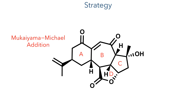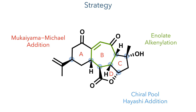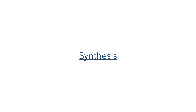The strategy that they devised would use a Mukaiyama-Aldol addition, together with an enolate alkynylation, to construct the central seven-membered ring. To synthesise the molecule with the correct stereochemistry, they would use starting materials drawn from the chiral pool, and also a Hayashi addition using a chiral catalyst. So let's start the synthesis with this Hayashi addition.